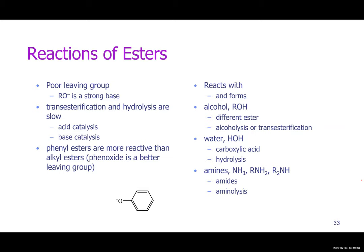The leaving group in an ester is RO minus, which is a strong base and a bad leaving group. These reactions are really slow unless you have a catalyst, because you have a bad leaving group. What you want to do to get it to come off is to protonate that oxygen — you don't want it to leave as RO minus — so you need to protonate to give you ROH as the leaving group.